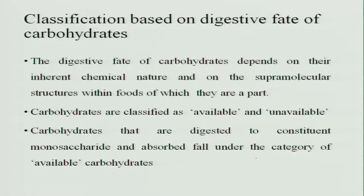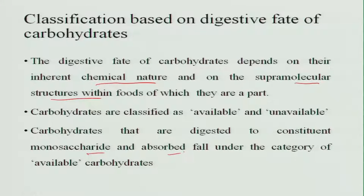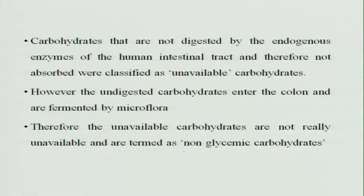Classification based on the digestive fate of carbohydrates: the digestive fate depends upon their inherent chemical nature and the supra-molecular structures within the foods of which they are a part. They are classified as available and unavailable carbohydrates. Carbohydrates that are digested to constituent monosaccharides and absorbed fall under available carbohydrates, whereas carbohydrates not digested by endogenous enzymes in the intestinal tract are classified as unavailable carbohydrates.